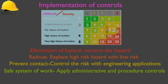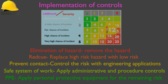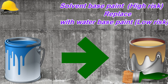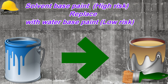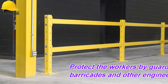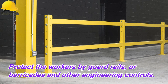The process of selecting controls in this way is called the hierarchy of control. The order of control must be: first, try to eliminate the hazard by avoiding or removing it. Second, try to reduce the risk by different means, such as replacement of a high-hazard substance with a low-hazard one. Third, prevent contact of a person with the hazard by engineering means or isolation.